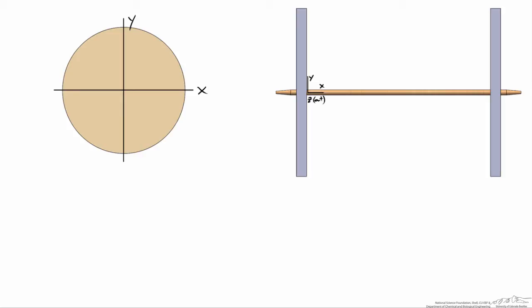To be consistent with the side view, we'll keep this as the y-axis, call that the z-axis, and have the x-axis running out at us.